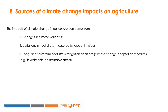With these differences between climate and weather, it should be noted that the impacts of climate change on agriculture can come from: (1) changes in climate variables; (2) variations in heat stress measured by drought indices; and (3) long- and short-term heat stress mitigation decisions, i.e., adaptation measures to the effects of climate change — for example, investments in sustainable assets.